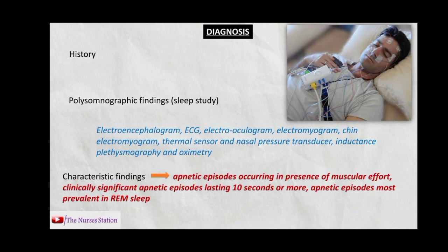The characteristic findings consistent with obstructive sleep apnea include apneic episodes occurring in the presence of muscular effort, clinically significant apneic episodes lasting 10 seconds or more, and apneic episodes most prevalent in the rapid eye movement (REM) stage of sleep. When these findings are present, we can conclude that the patient has obstructive sleep apnea.